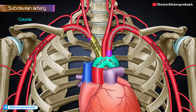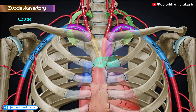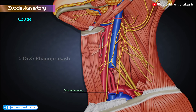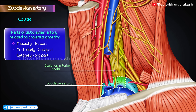Course. Each artery arches laterally from the sternoclavicular joint to the outer border of the first rib, where it ends by becoming continuous with the axillary artery. The scalenus anterior muscle crosses the artery anteriorly and divides it into three parts. The first part is medial, the second part is posterior, and the third part is lateral to the scalenus anterior.